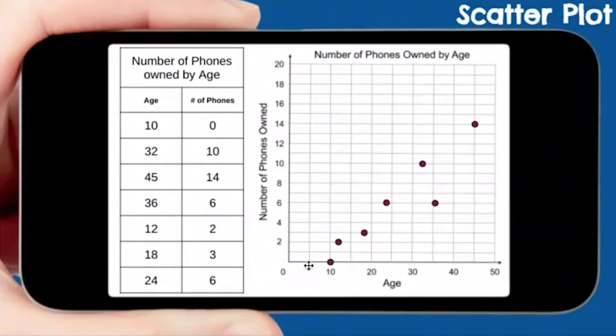You can actually see this would be considered a positive correlation. It correlates, it's positive. For the most part, when people get older, they have had more phones in their life. If it went the other direction, it would be called a negative correlation. And if it didn't have any correlation, it would just be all over the place. But that's neither here nor there.